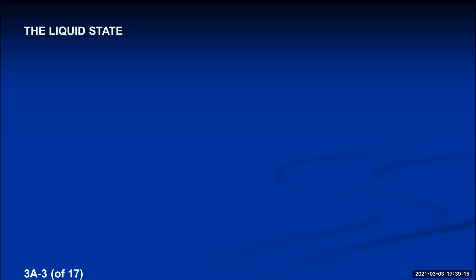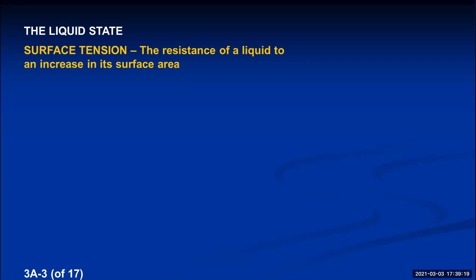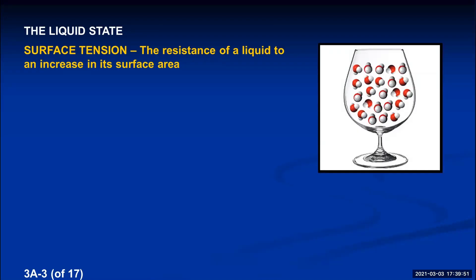Let's talk about properties of liquids. First, liquids always possess surface tension - the resistance of a liquid to an increase in its surface area. Liquid molecules want to be in the middle of the liquid, not on the surface, because surface molecules are less stable. A molecule on the surface is attracted by only about five other molecules, while a molecule in the middle is attracted by about seven - more attraction means more stability.